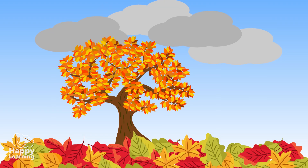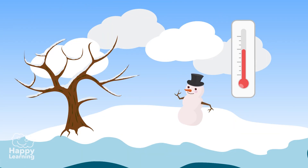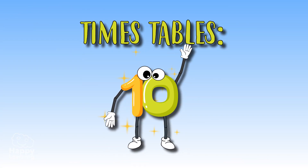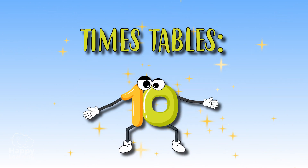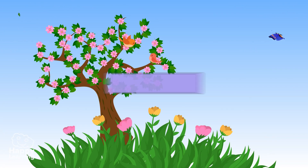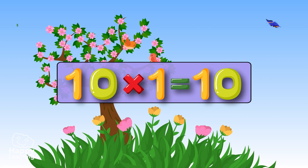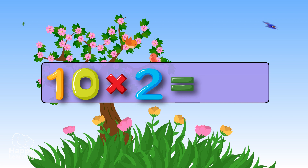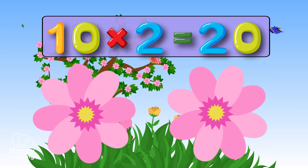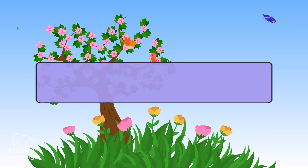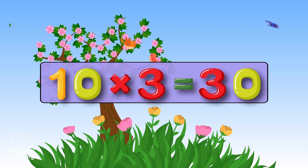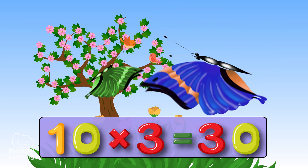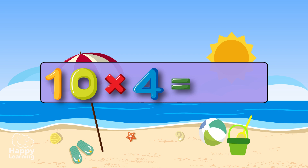Hello, happy friends! Welcome to a new Happy Learning video. Today we're going to learn the 10 times table. 10 times 1 is 10. 10 times 2 is 20. 10 times 3 is 30. 10 times 4 is 40.